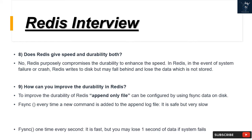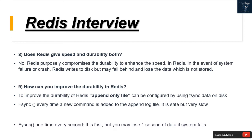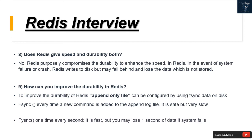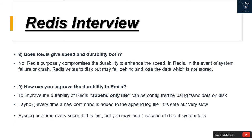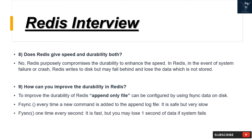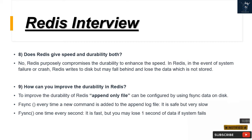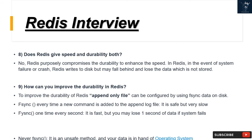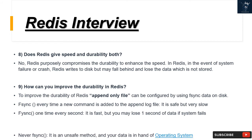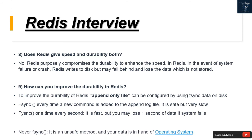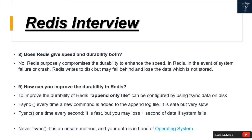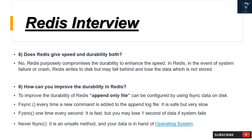Question 9: How can you improve the durability in Redis? To improve durability, an append-only file can be configured using fsync. Options include: fsync every time a new command is added to the append log file — safe but very slow; fsync once every second — fast, but you may lose one second of data if the system fails; and never fsync — unsafe, leaving data in the hands of the operating system.